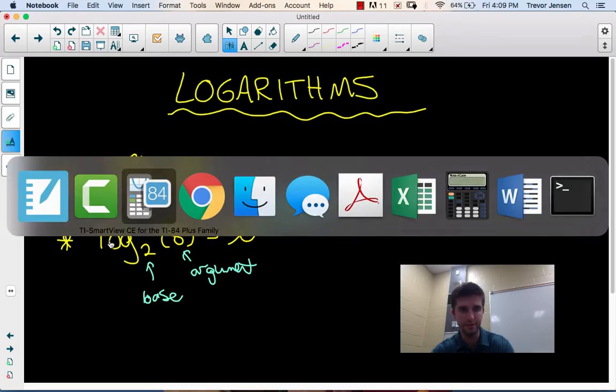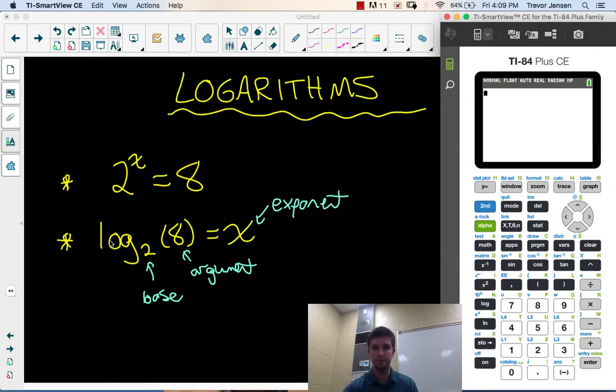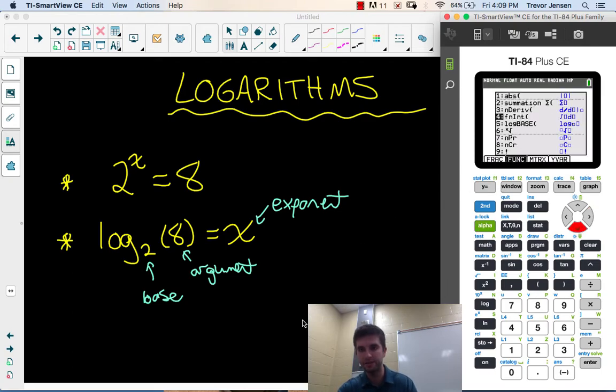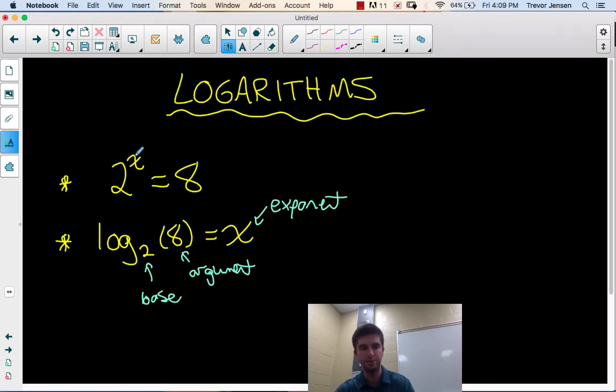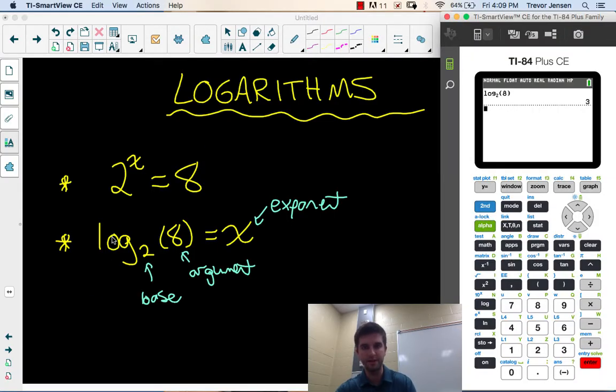On your calculator, you need to locate your log button. Some calculators have a log button where you can change the base to be whatever you want. So that's my button right here. I can do log base 2 of 8, and my calculator should tell me 3. The reason the answer is 3 is because 2 cubed is 8. 2 times 2 times 2 is 8. So this is a way of getting your calculator to solve for an unknown exponent using a logarithm.